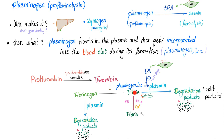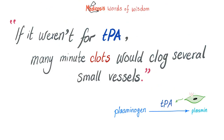Then plasmin — the crazy active guy — degrades fibrin into fibrin degradation products, fibrinogen into fibrinogen degradation products, and the stabilized fibrin into D-dimer. After the clot is formed, the plasminogen incorporated into the clot is converted into plasmin, which turns around and eats the clot — as Shakespeare said, 'Even you, Brutus.' If it weren't for TPA, many minute clots would clog several small vessels until you die — millions of clots. Even though the endothelium is traumatized, it can produce the glorious TPA to save our lives. Thank you, endothelium.